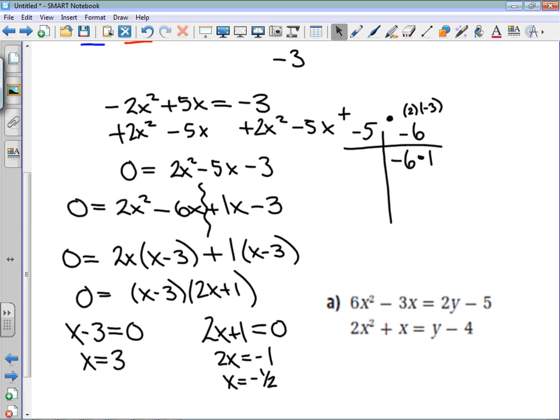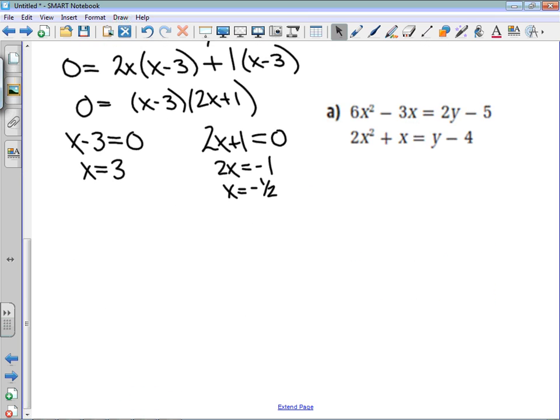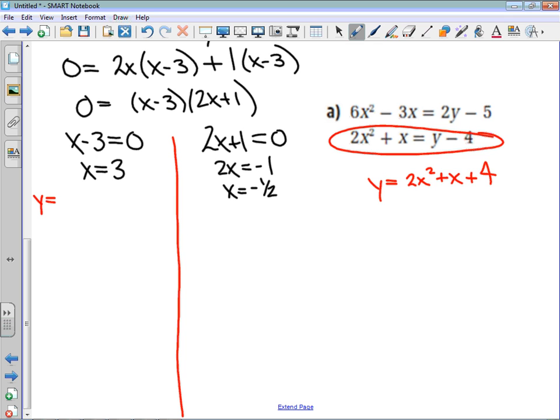I always recommend students choose the easiest one, and I would argue the easiest one by far is to take this equation and move the 4 to the other side. And we get that y is equal to 2x squared plus x plus 4. So I'm going to do that with my two x values. When x is 3, y is equal to 2 times 3 squared plus 3 plus 4. That's y is equal to 18 plus 3 plus 4. So y is equal to 25. That means the point 3 comma 25 is a solution to this system.